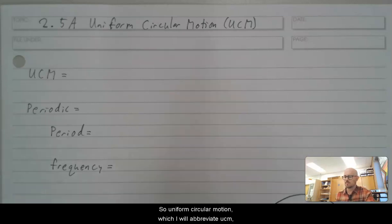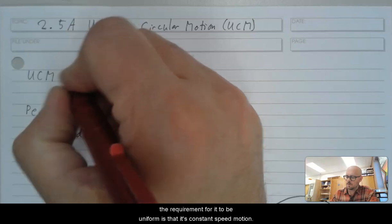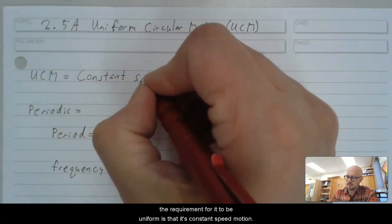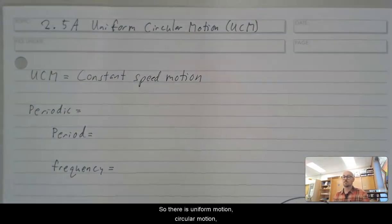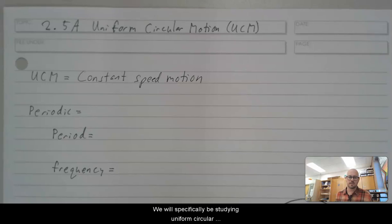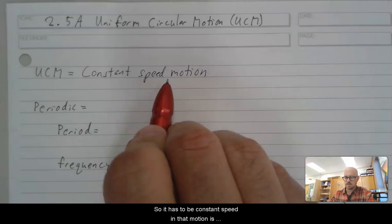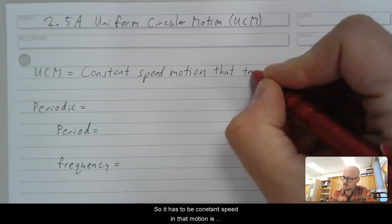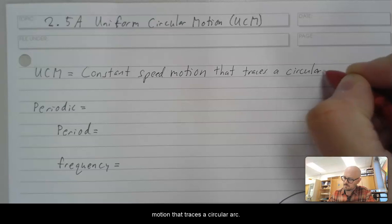So in this first video we're going to introduce what Uniform Circular Motion is and some of its key properties. Uniform Circular Motion, which I will abbreviate UCM, the requirement for it to be uniform is that it's constant speed motion. So there is uniform circular motion and there is non-uniform circular motion. We will specifically be studying uniform circular motion in this part of the course. It has to be constant speed, and that motion is motion that traces a circular arc.